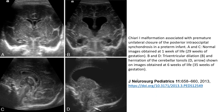This is a Chiari malformation associated with premature unilateral closure of the posterior intraoccipital synchondrosis in a premature infant. Image A and C show the normal image obtained at one week of life. Image B and D show ventricular dilation and herniation of the cerebellar tonsils, seen in the image obtained at six weeks of life.